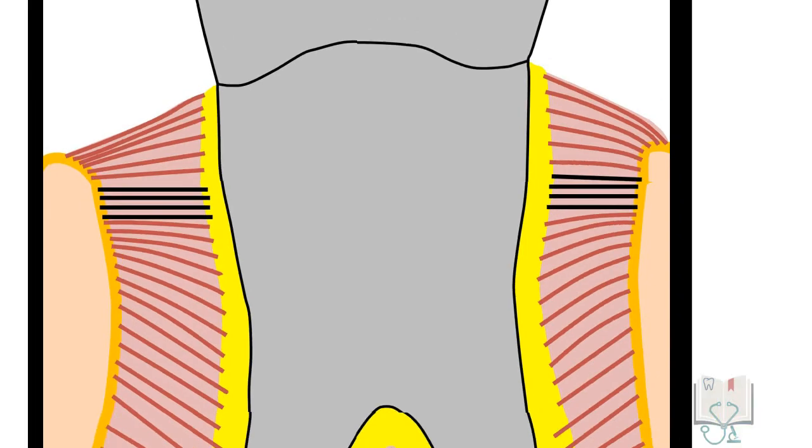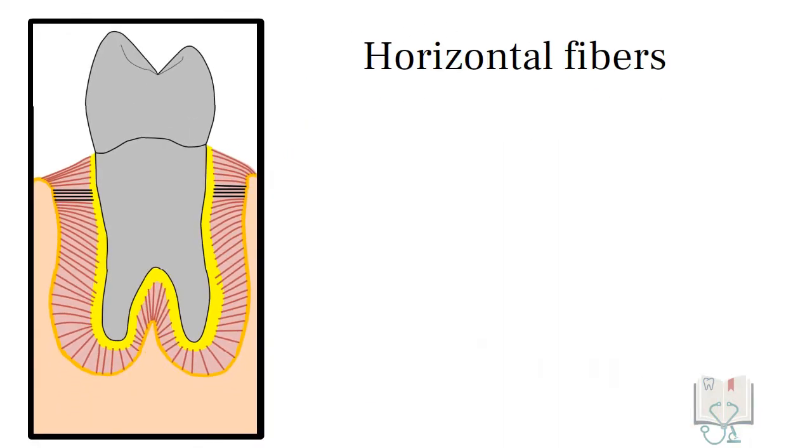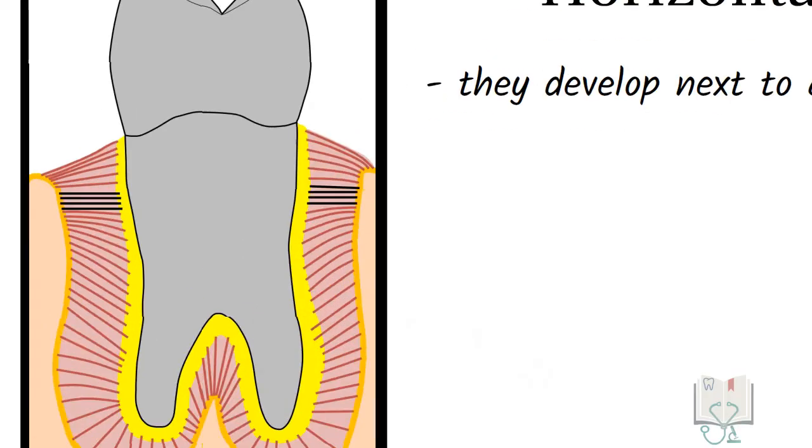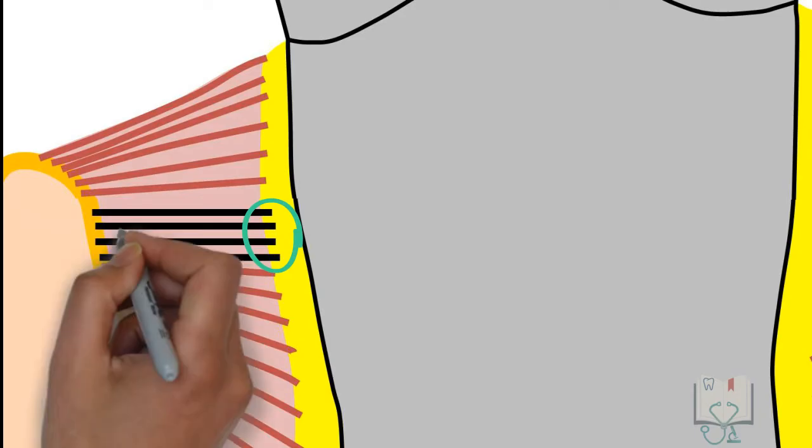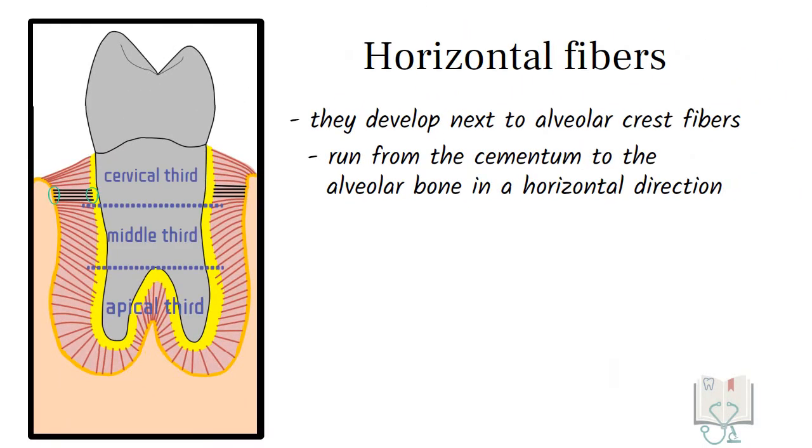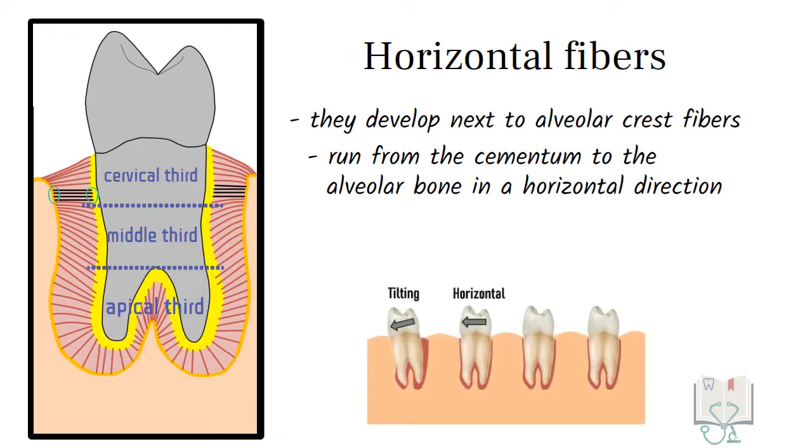The next group of fibers, horizontal fibers. They develop after development of the alveolar crest fibers. These fibers run from the cementum to the alveolar bone in a horizontal direction. They are limited in the cervical third of the root. They resist tilting and horizontal forces.